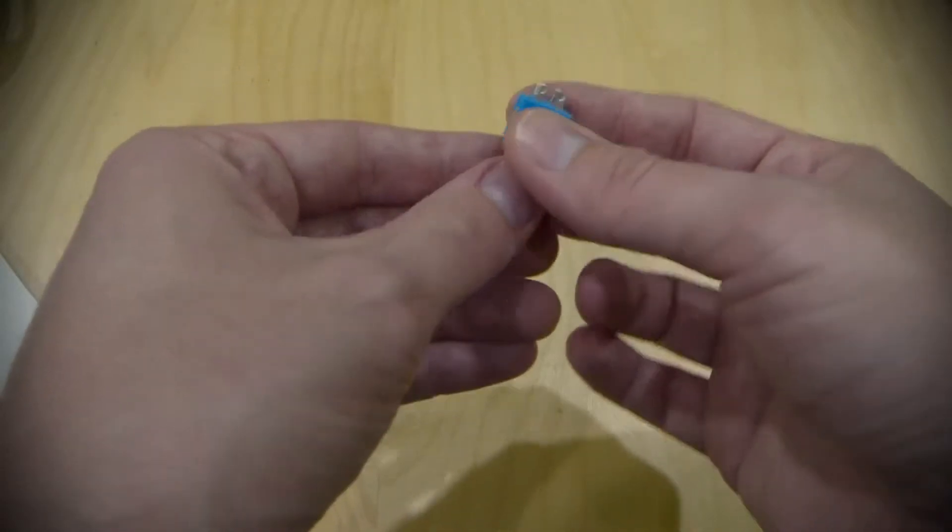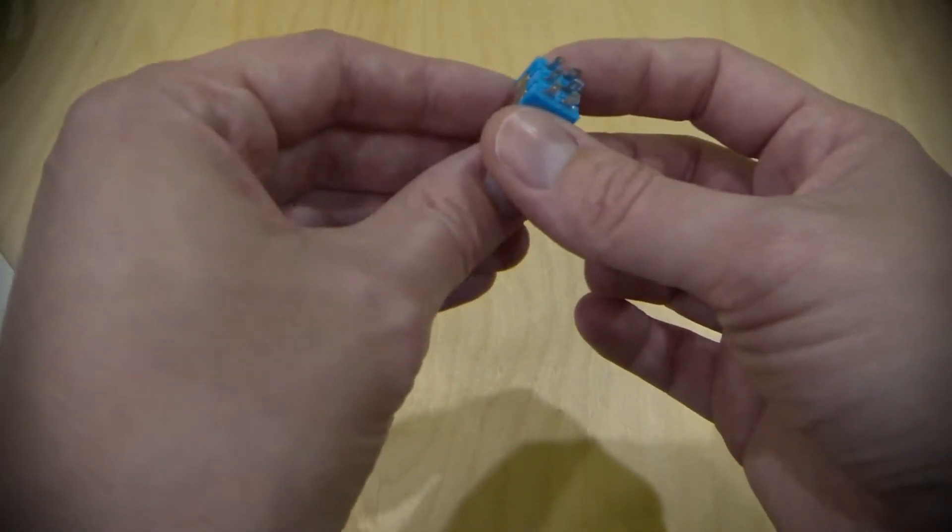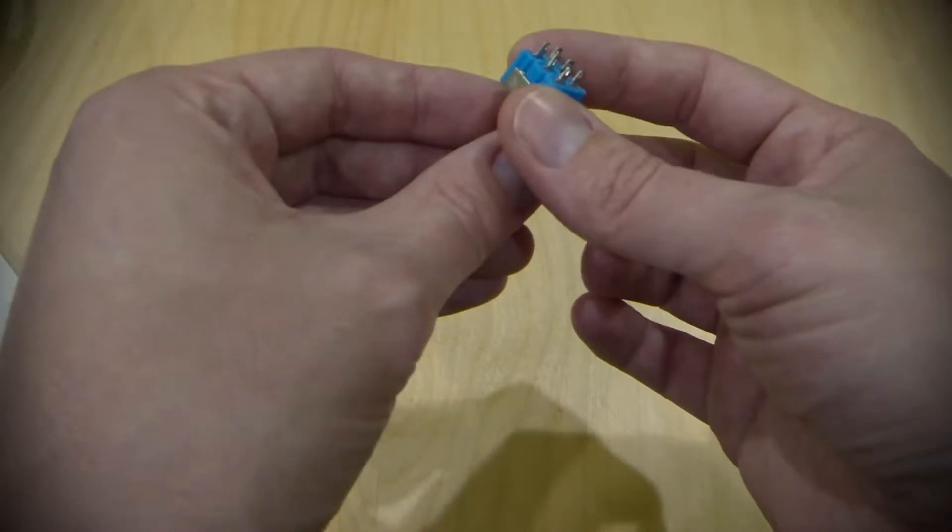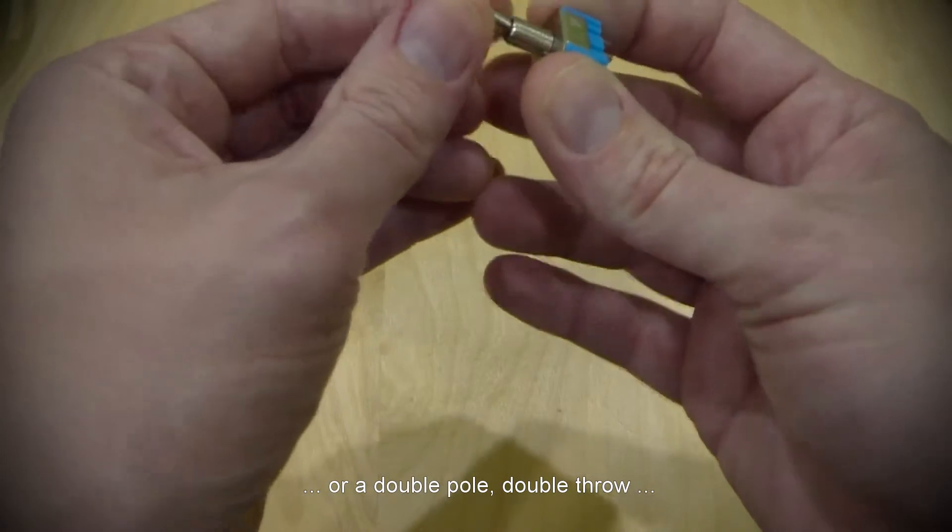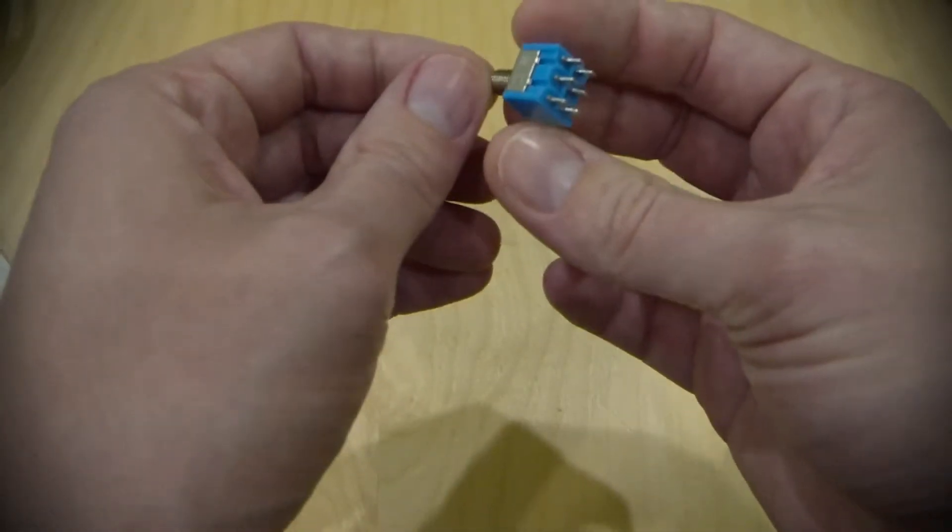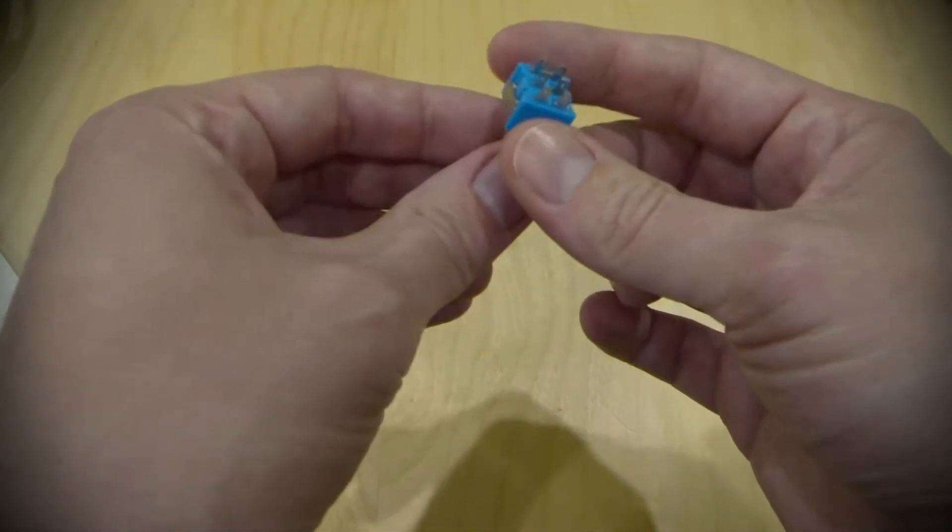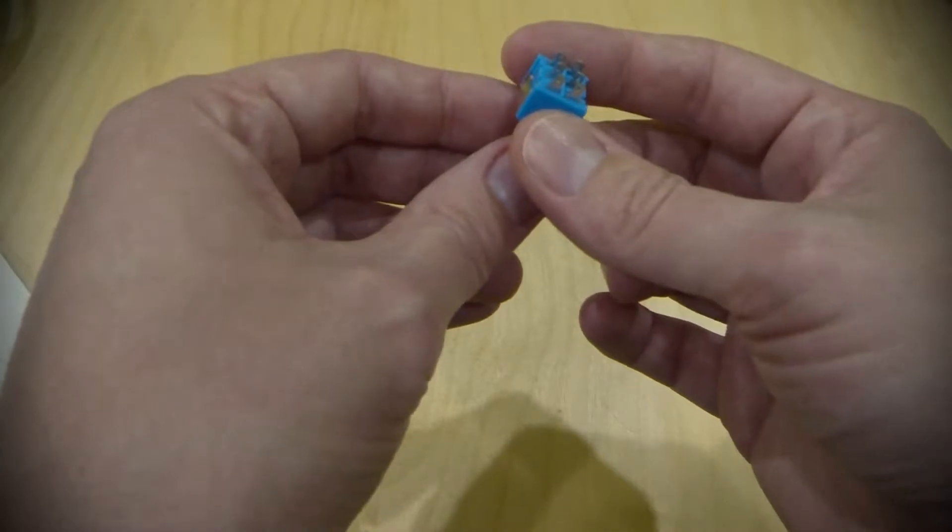And in order to wire this, you're going to need a dual-pull, dual-throw switch like this one. You can use a push-pull pot, you can use a mini-toggle, you can use a slider. All different ways. As long as it's a dual-pull, dual-throw switch, you're good.